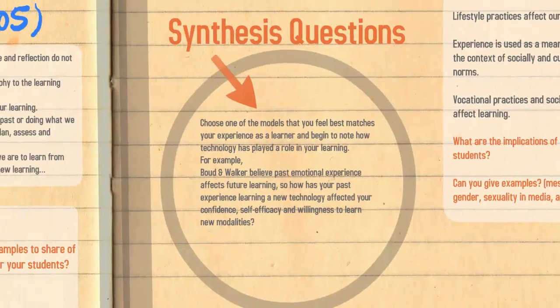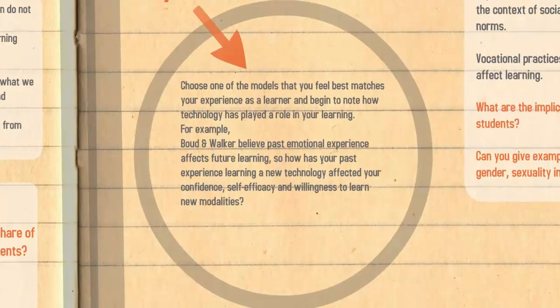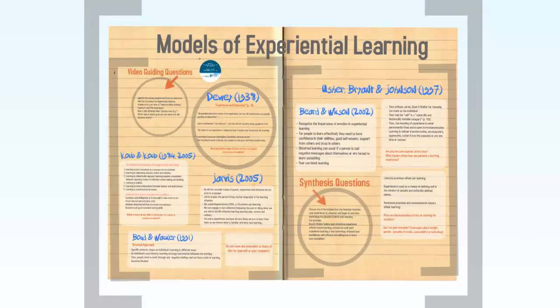Here are the synthesis questions for this module. Choose one of the models that you feel best matches your experience as a learner and begin to note how technology has played a role in your learning. For example, Boot and Walker believe past emotional experience affects future learning — so how has your past experience learning a new technology affected your confidence, self-efficacy and willingness to learn new modalities? I look forward to hearing your examples in tutorial. Thank you.